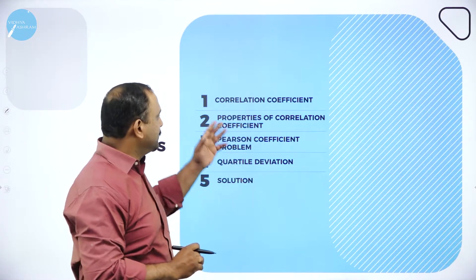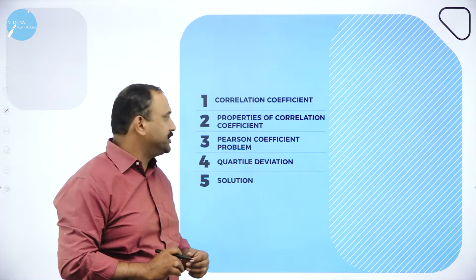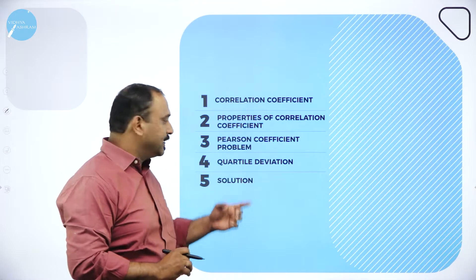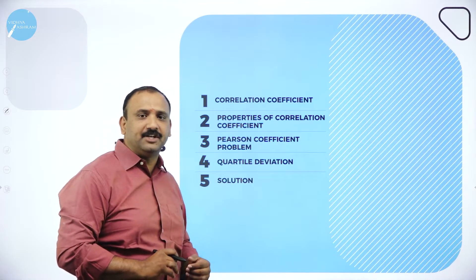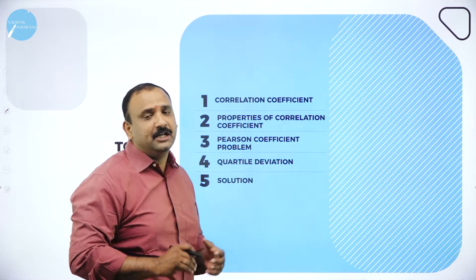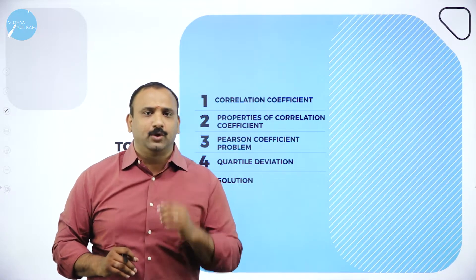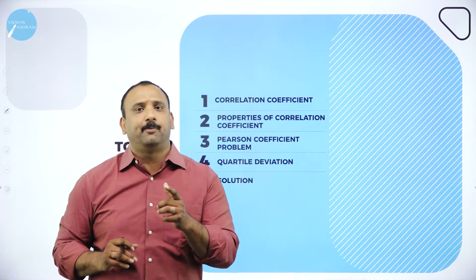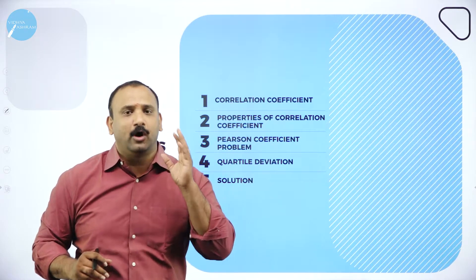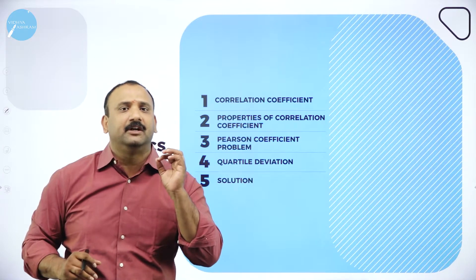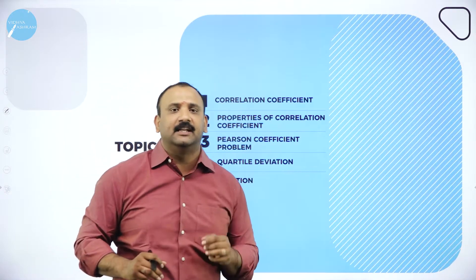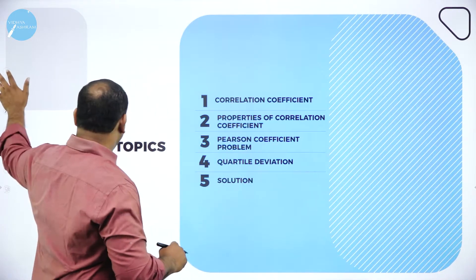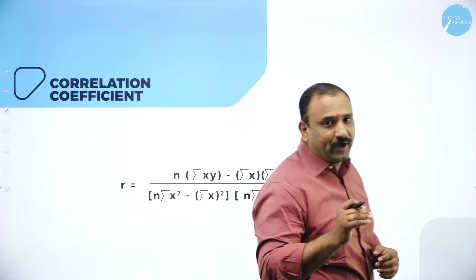Moving forward, these are the topics we are going to cover today. We're going to start with the correlation coefficient, then the properties of correlation coefficient — the Pearson — and then we're going to talk about the quartile deviation and its solution. This session is going to be important from the exam standpoint and for understanding statistical analysis in economics.